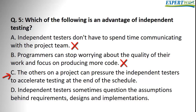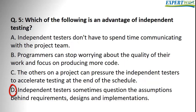Option C — the others on the project can pressure the independent testers to accelerate testing at the end of the schedule — is again a wrong statement. Independent testing has nothing to do with adding pressure to the independent testers. Option D — independent testers sometimes question the assumptions behind requirement design and implementation — is true. This is actually the whole purpose of independent testing. So the correct answer is D.